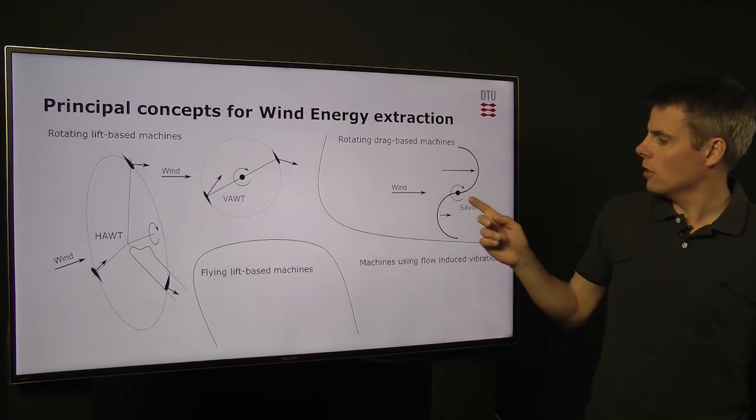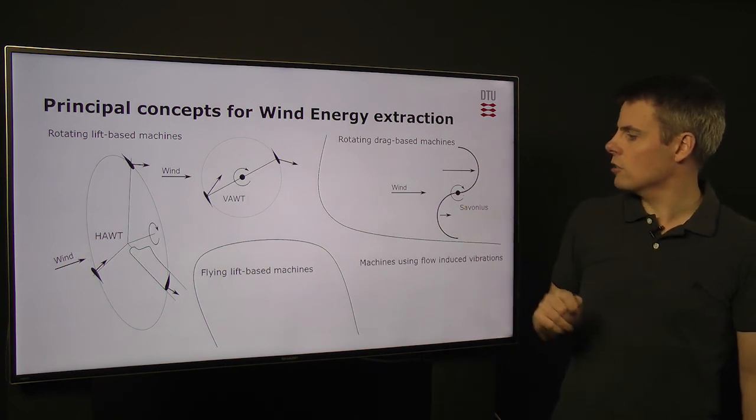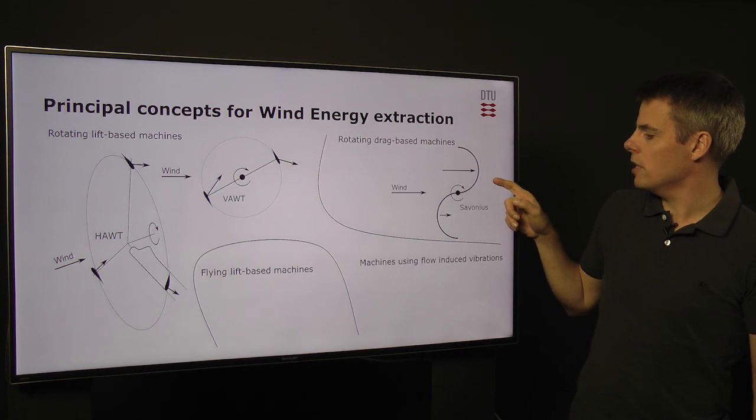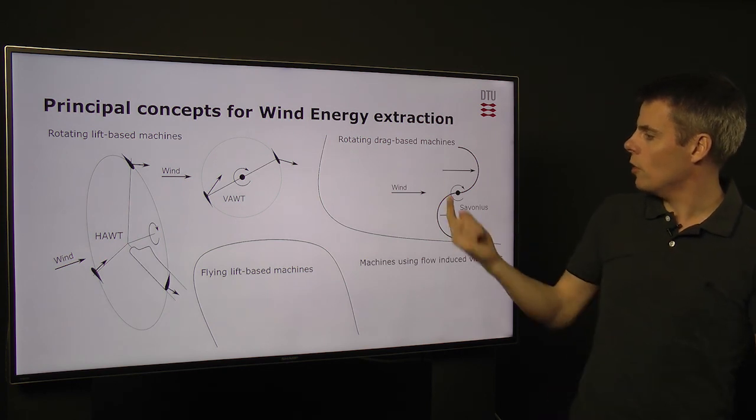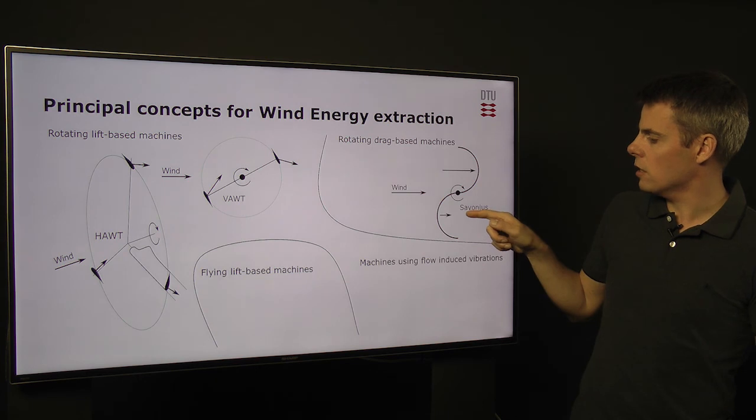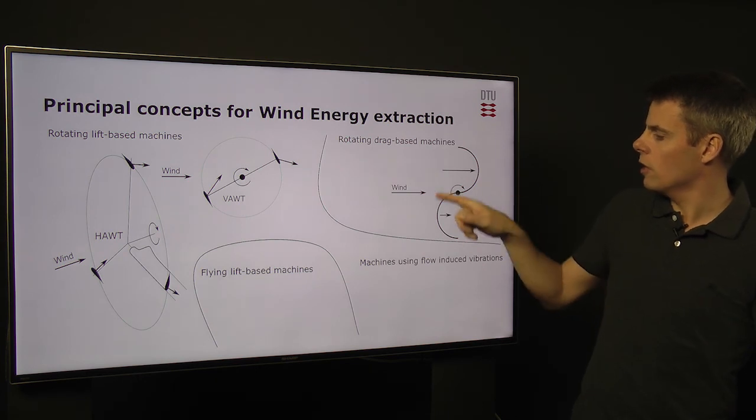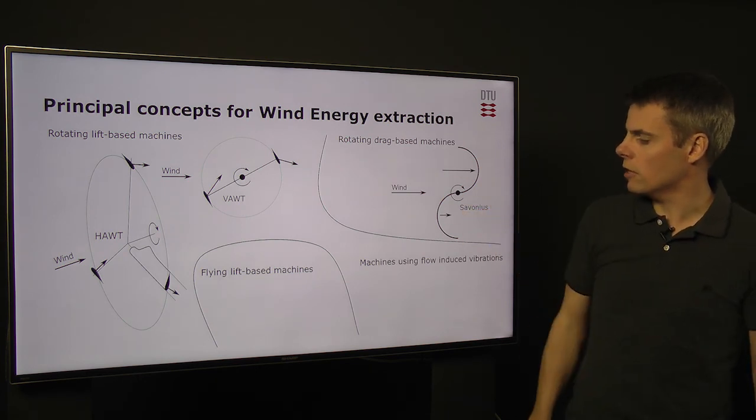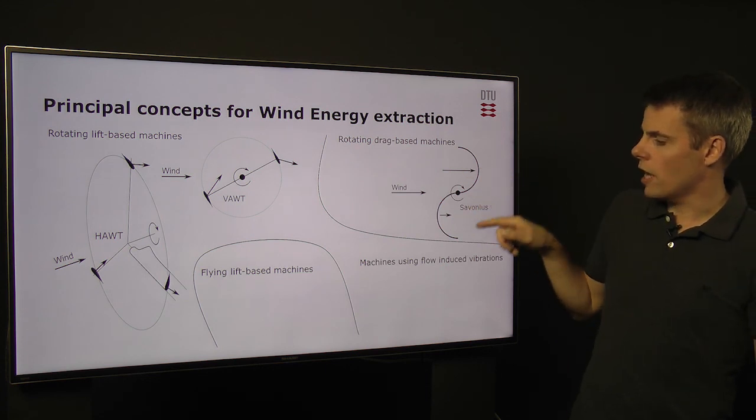Another typical vertical axis turbine is the drag-based Savonius turbines, where the drag on one side is larger than the drag on the other side and therefore creates a moment that makes the shaft rotate.